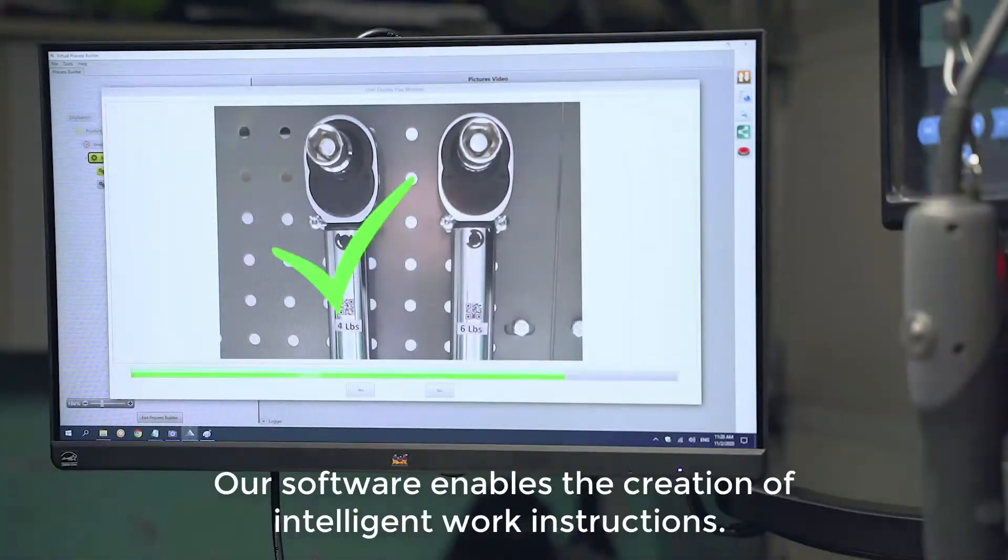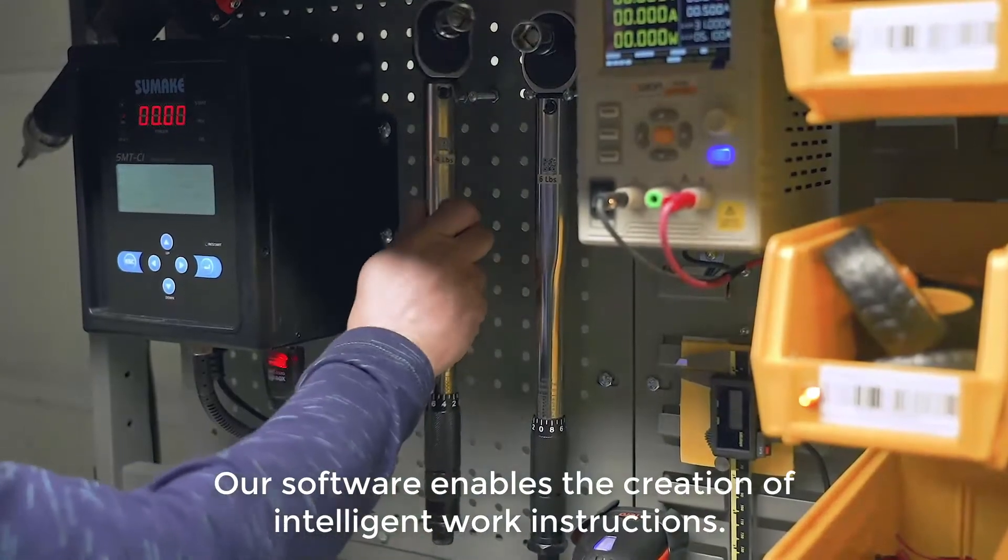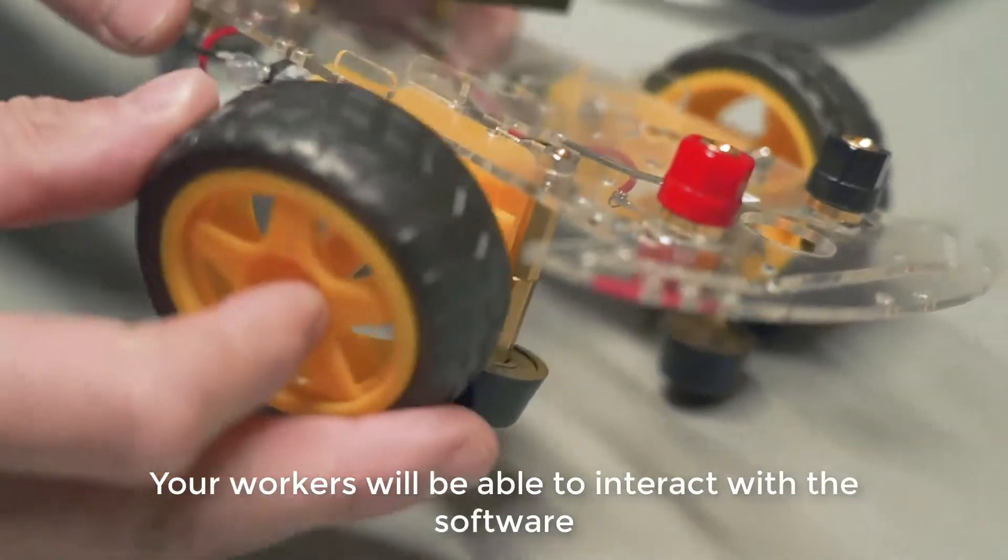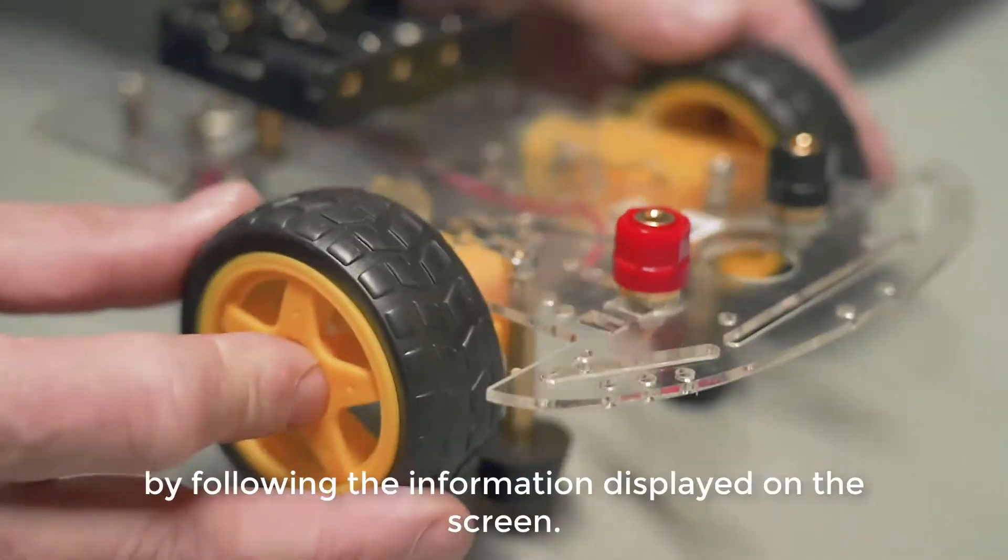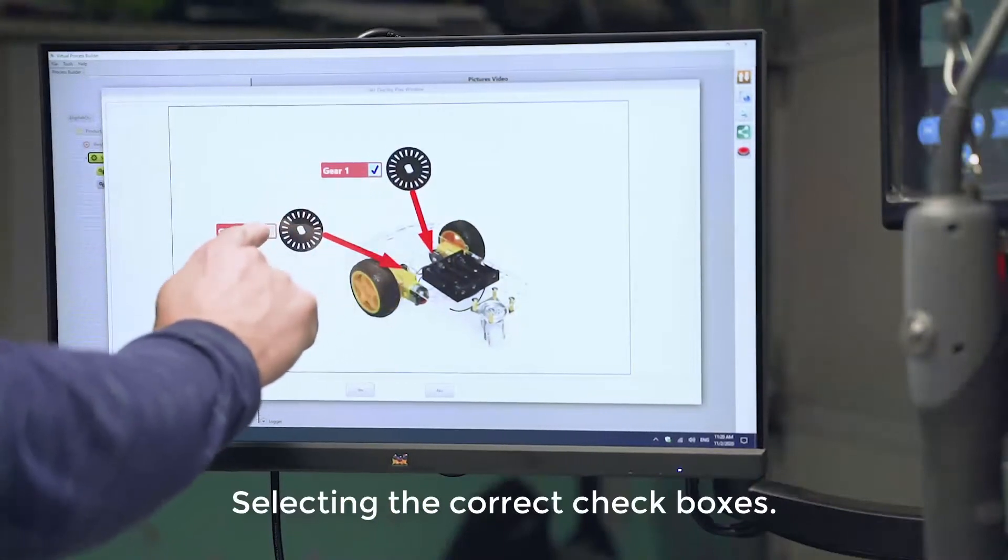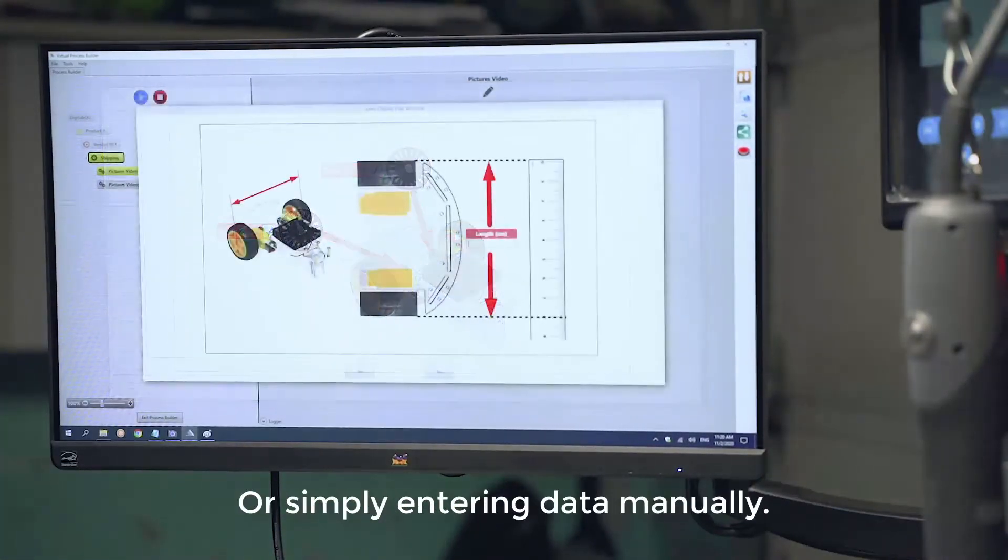Our software enables the creation of intelligent work instructions. These instructions are created from your existing documentation. Your workers will be able to interact with the software by following the information displayed on the screen, selecting the correct checkboxes, or simply entering data manually.